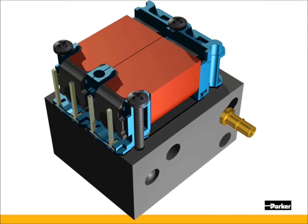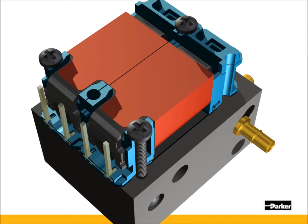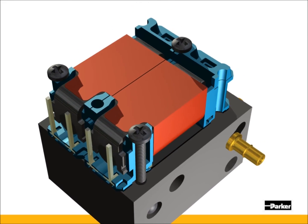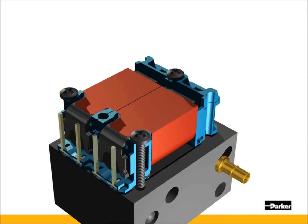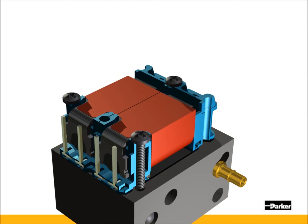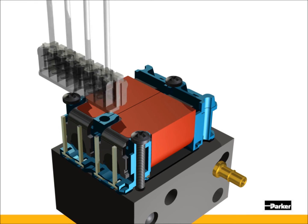When installing multiple valves onto a manifold, screws may be placed in every other position between valves. Once the valves have been mechanically fastened to the manifold, the electrical connector may be inserted over the pins.